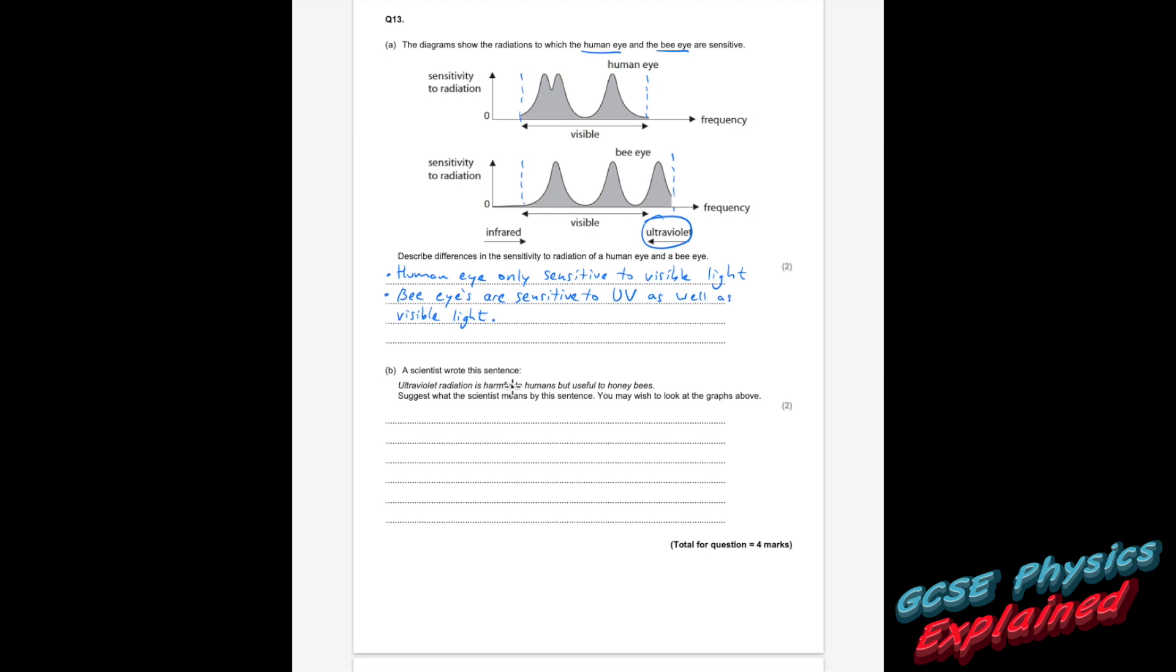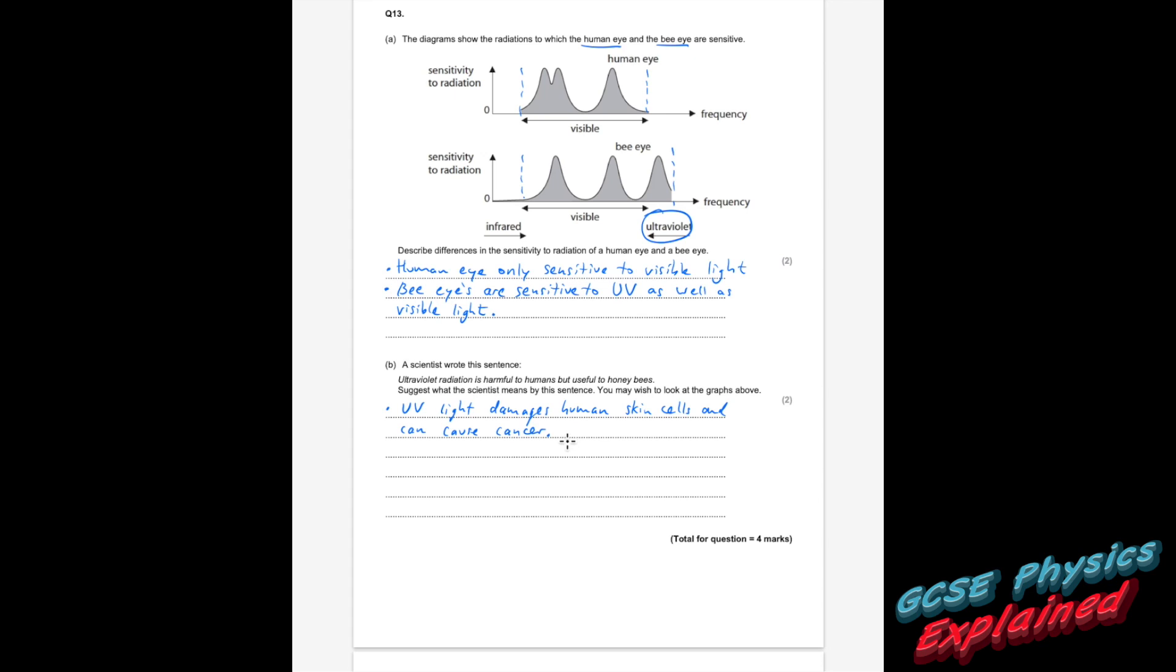If it was worth three marks, you could see that the bee eye, its sensitivity is kind of spread out over three peaks, whereas the human eyes are bunched together. Part B. A scientist wrote this sentence: ultraviolet radiation is harmful to humans, but useful to honeybees. Suggest what the scientist means by this sentence. Well, the human eye, we can't see ultraviolet. All that ultraviolet does is it harms our skin and it could damage our skin cells and cause skin cancer. Whereas ultraviolet is useful to bees because they can actually see UV.